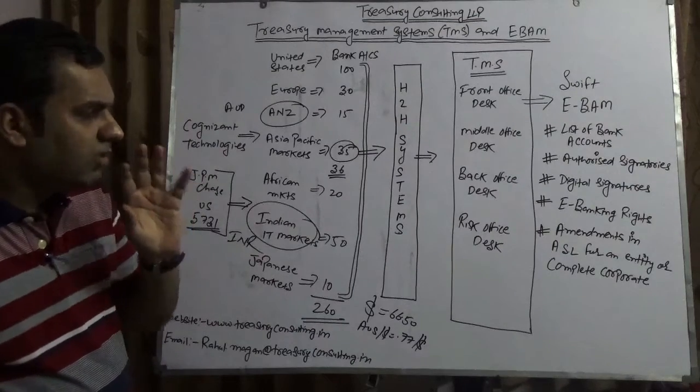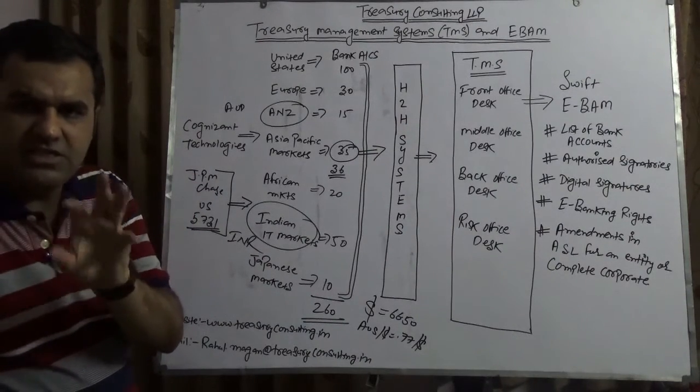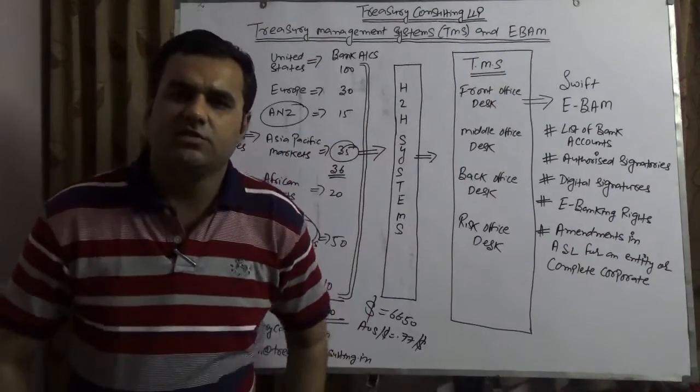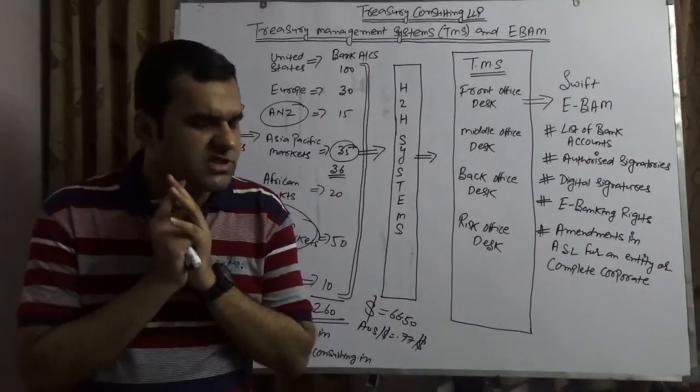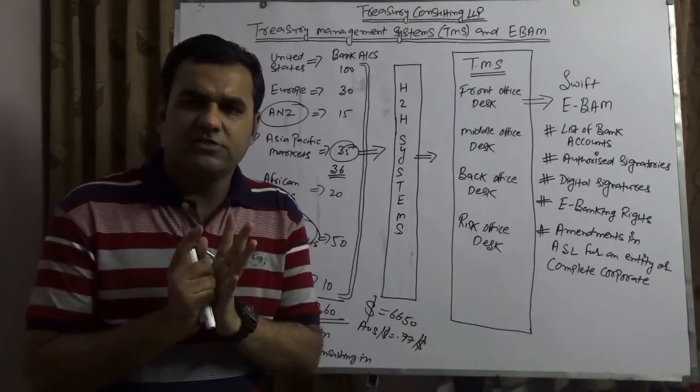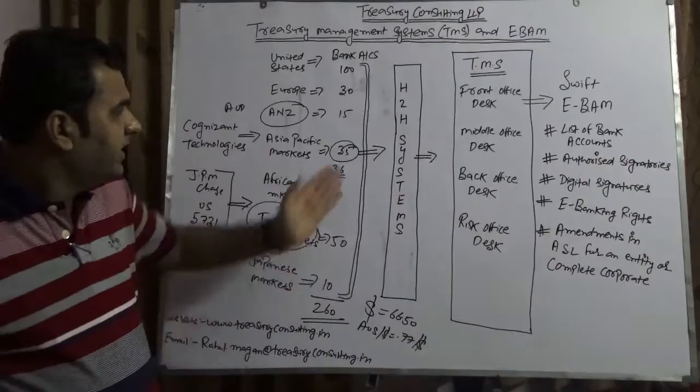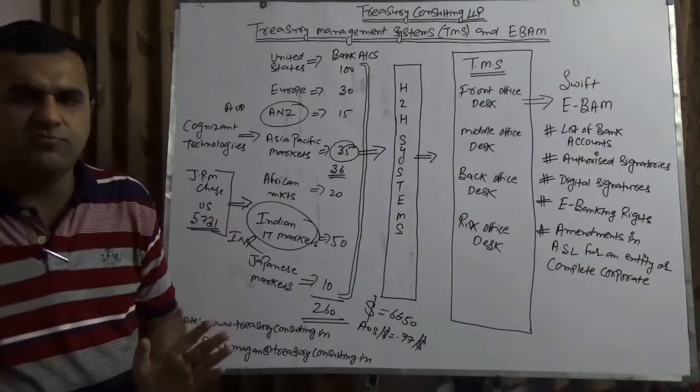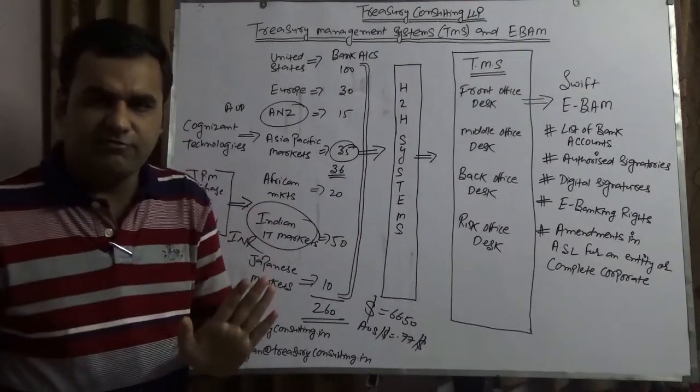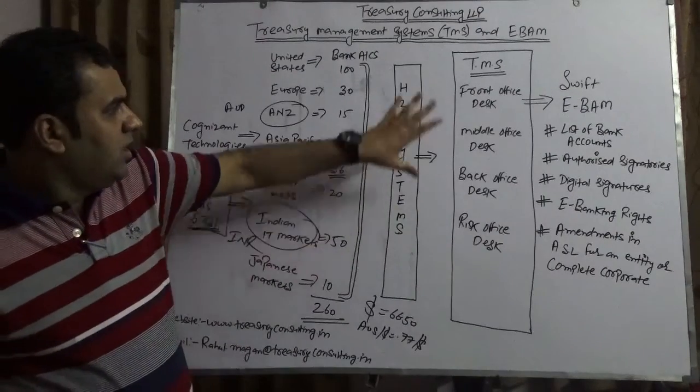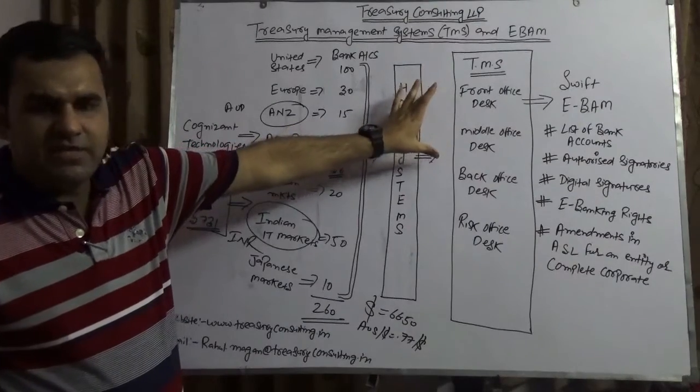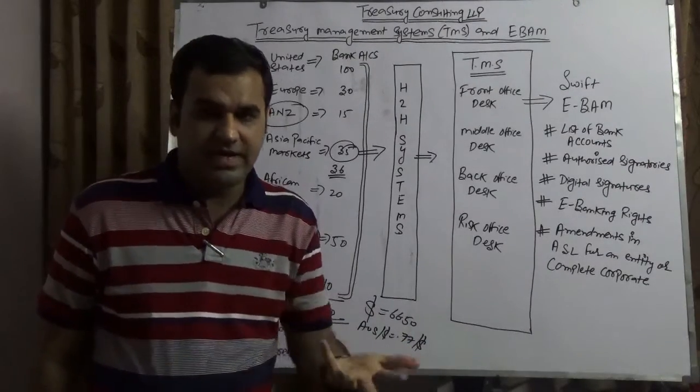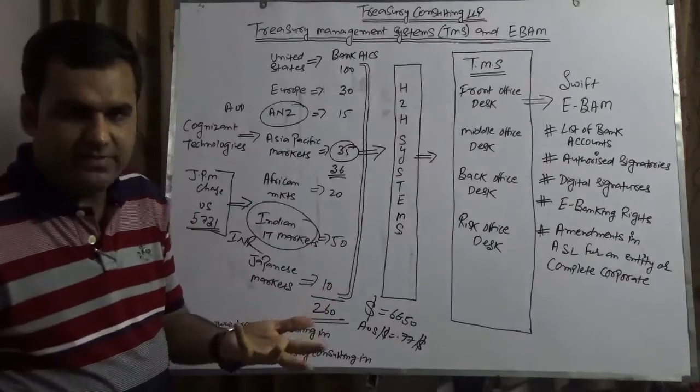There's TMS, Treasury Management Systems, and that TMS if you can integrate with another technology which is EBAM, Electronic Banking Account Management, it would be a wonder of wonders. This video is about that. These are IT companies, but the treasury function of majority IT companies are just like a Sarkari office. Very few IT companies have TMS like TCS, Cognizant and some others.